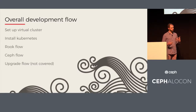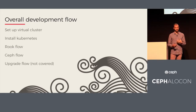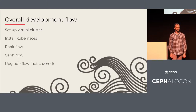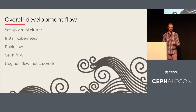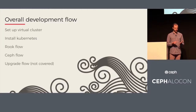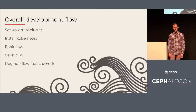Now, talking about the actual development flow: we start by setting up a virtual cluster — or a real cluster if you're feeling bold — and then installing Kubernetes. Once those first two steps are done, you generally don't have to revisit them. There are separate workflows for Rook and for Ceph, and also an upgrade workflow combining both, which is sufficiently complicated that we'll skip it today.